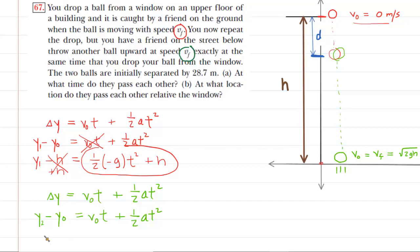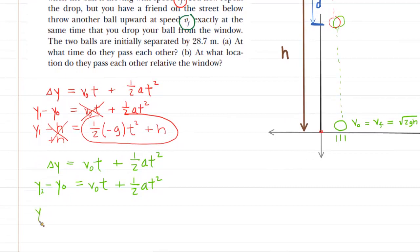We'll cancel it out on the left side. So we have an expression right here for the final y-coordinate of the first red ball. We're going to do the same thing with the green ball. Again, we don't know the final y-coordinate, y2.